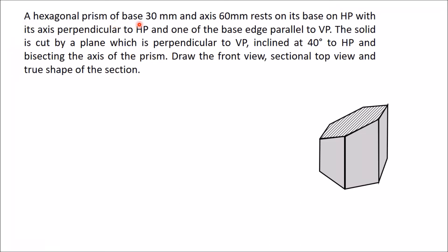A hexagonal prism of base 30 mm and axis 60 mm rests on its base on HP with its axis perpendicular to HP and one of the base edge parallel to VP. The solid is cut by a plane which is perpendicular to VP, inclined at 40 degrees to HP, and bisecting the axis of the prism. Draw the front view, sectional top view, and true shape of the section. For this, first draw the XY line.